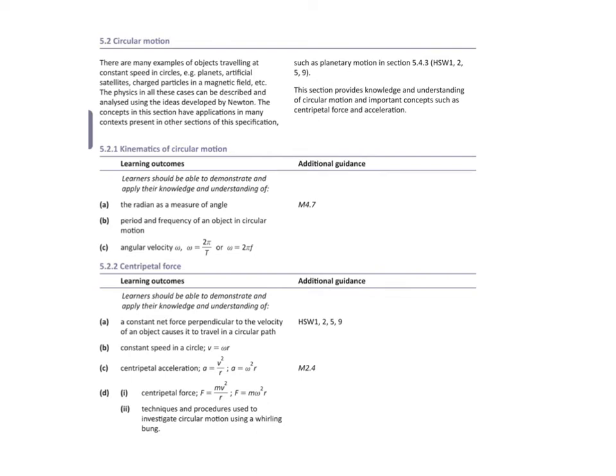This is chapter 16, which involves circular motion. Even though it's a very small chapter, we'll use a lot of the concepts when it comes to objects that travel at constant speed in circles — for example, planetary motion or charged particles in a magnetic field. It's also quite linked to mechanics.